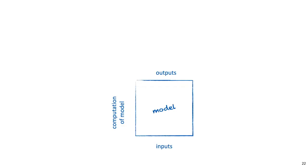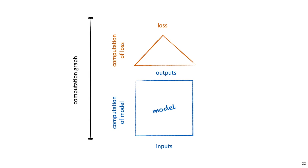Note that this doesn't mean we can only ever train neural networks with a single scalar output, because that would be quite boring. Even the multi-class classification model from the previous lecture already had three outputs, and later we'd want to build neural networks that can generate faces or play chess. Our model can have any number of outputs of any shape and size. However, the loss we define over those outputs needs to map them all to a single scalar value. The computation graph is always the model plus the computation of the loss, so no matter how complex our model becomes, the computation used for backpropagation always has a single scalar output — namely the loss.